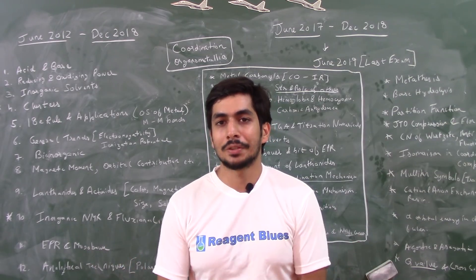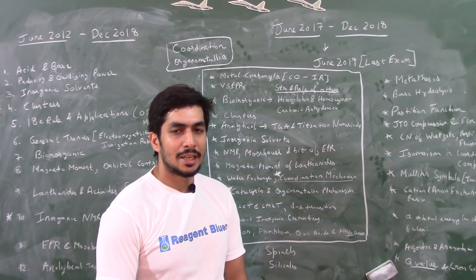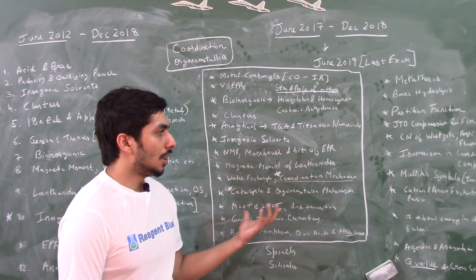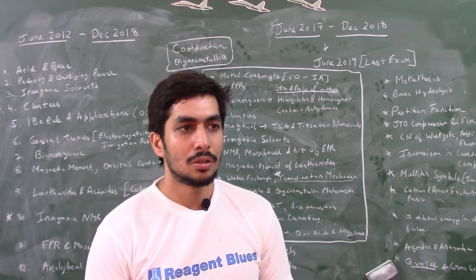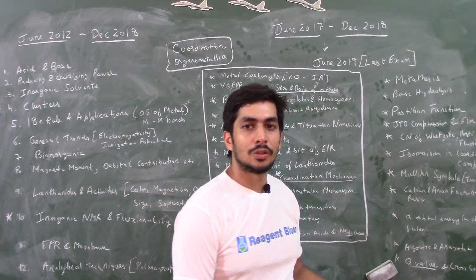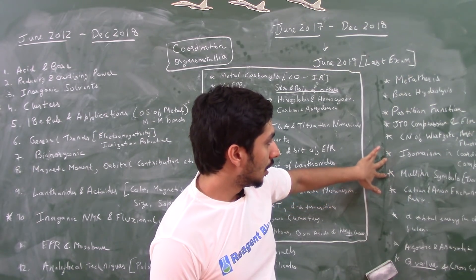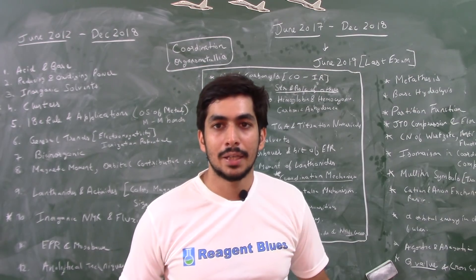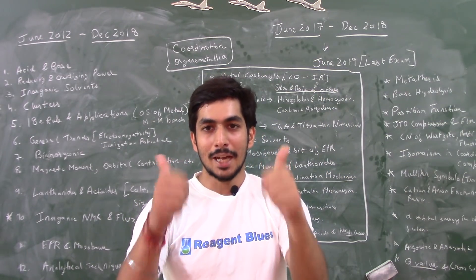That's about it — it might be overwhelming with too many topics, but this is what inorganic chemistry is. The topics are quite simple: if you sit and study coordination mechanism properly it won't take more than two days. If you do at least these topics well, you can easily score around 15 to 16 four-mark questions from inorganic chemistry. Especially focus on isomerism, Mulliken symbols, and Jahn-Teller distortion (compression and elongation) — these three are very important and relevant for the June 2019 exam. Please subscribe and let me know in the comments if you found this useful.